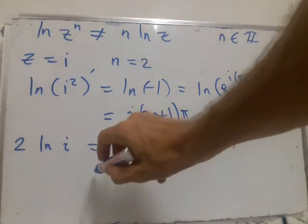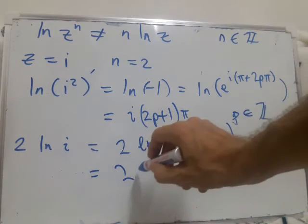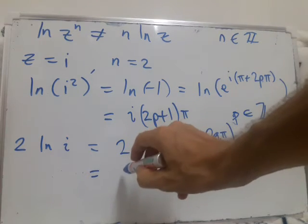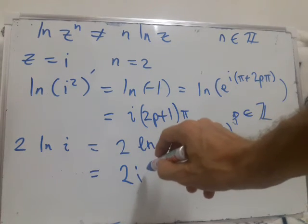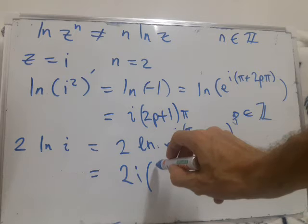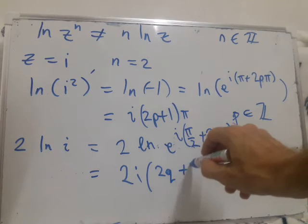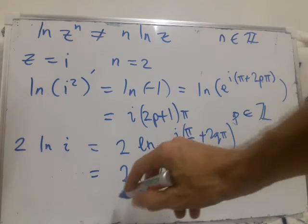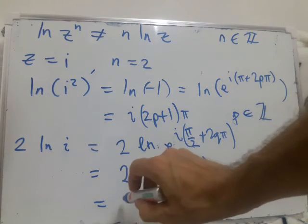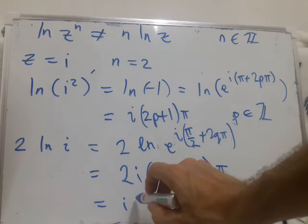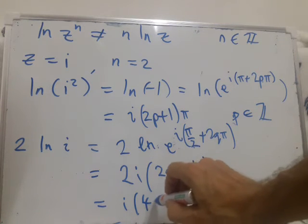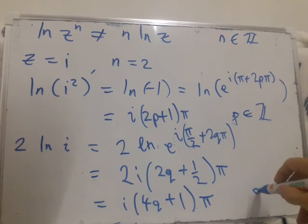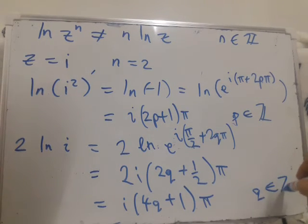And that gives us 2 times i times 2q plus 1 half pi, which is i times 4q plus 1 pi, where q is any integer.